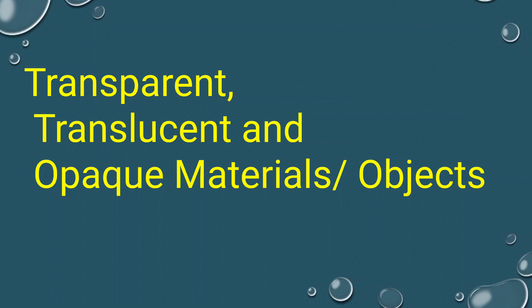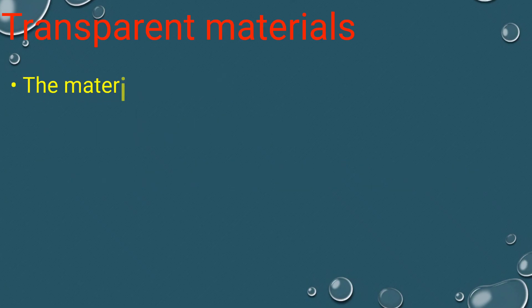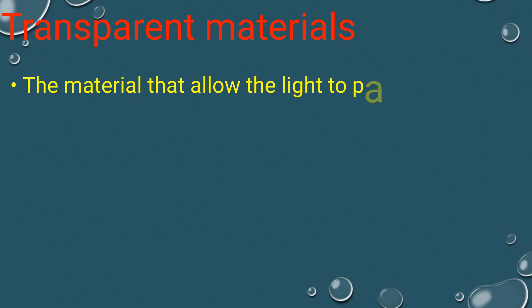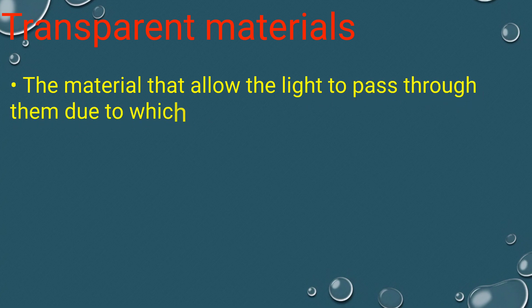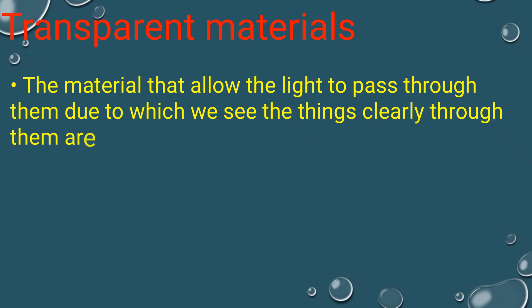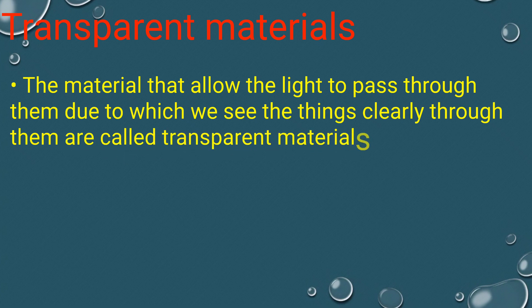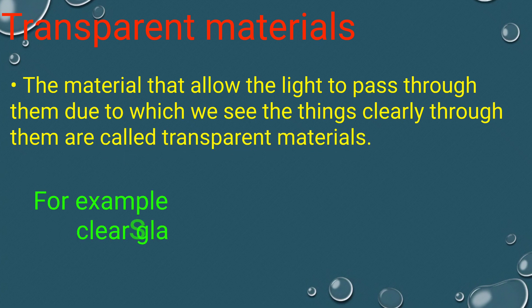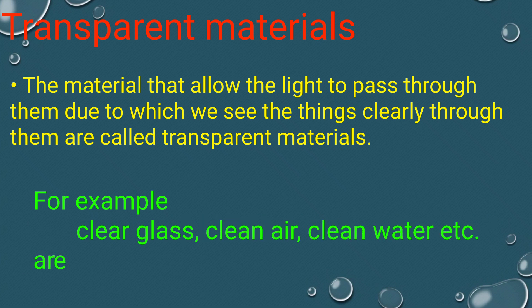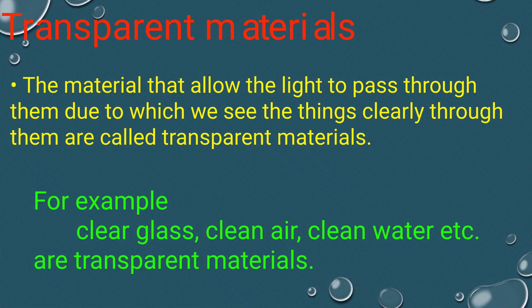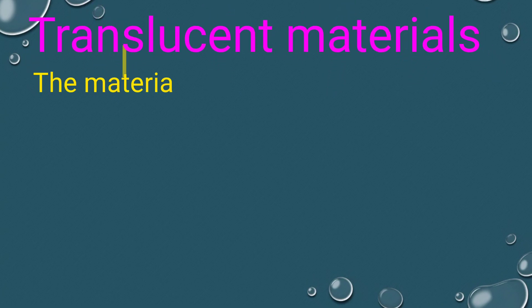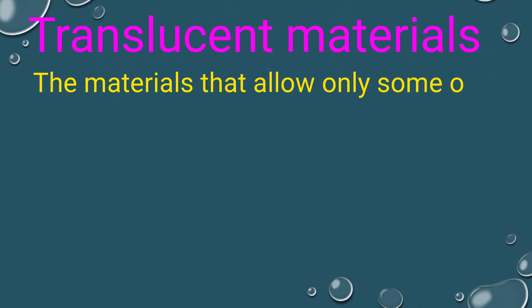Hello friends, welcome to my channel. In this video we discuss transparent, translucent, and opaque materials. Transparent materials are materials that allow light to pass through them, due to which we can see things clearly through them. For example, clear glass, clean air, and clean water are all transparent materials.